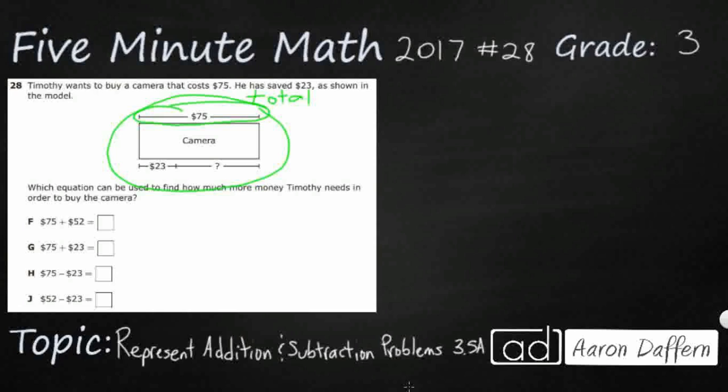So far he's got $23, so that's this part. And so we need to find an equation that could be used to find how much more money he needs to buy the camera. And so we see 75, we see 23, we also see 52 popping up.